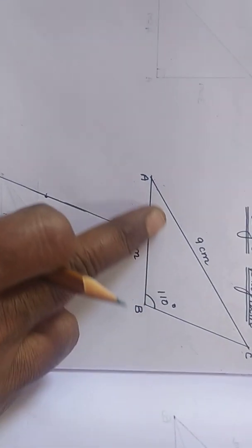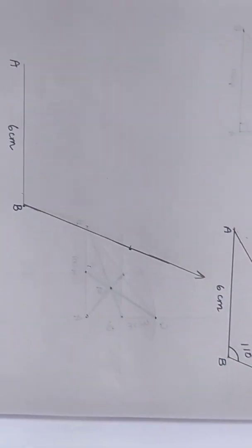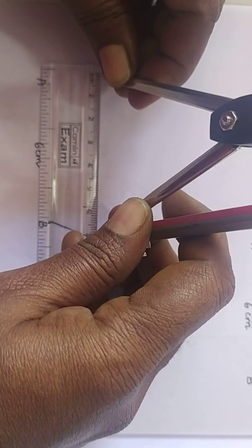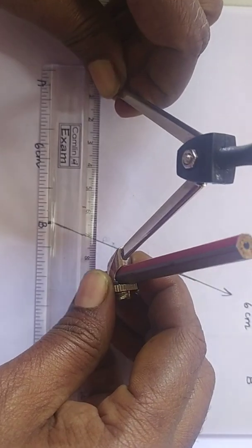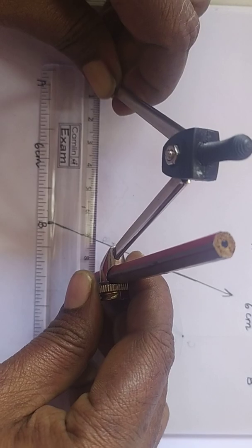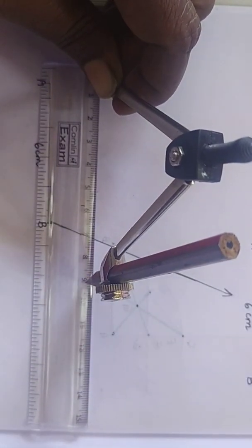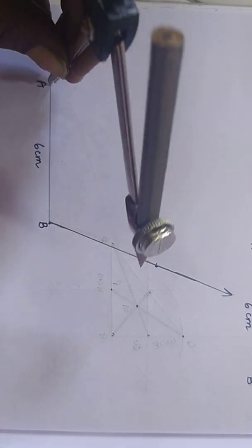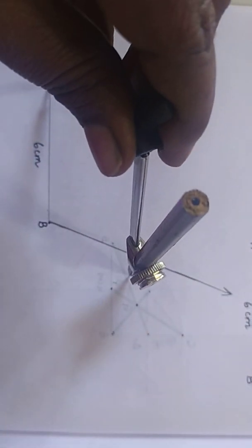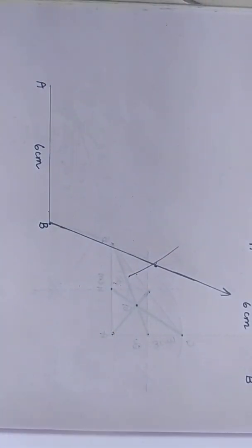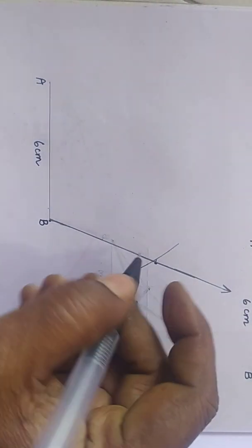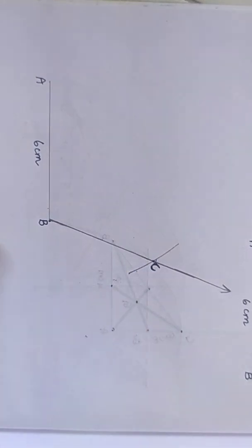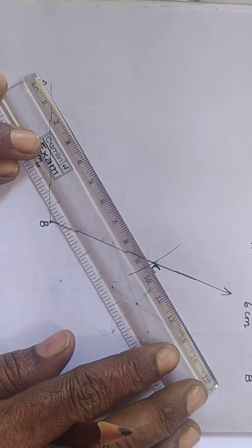Then, with A as center, take 9 cm and cut an arc on this angle. Using compass, take 9 cm and place the needle end of the compass at A. Cut an arc of 9 cm. You can name the meeting point of this angle and the arc as C. Join AC.